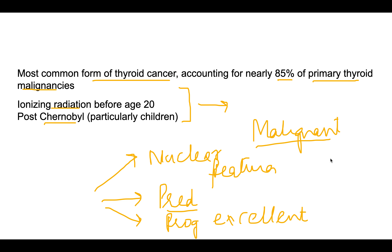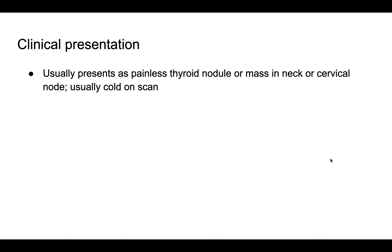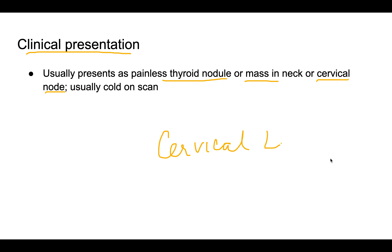Regarding clinical presentation, the patient can present with a painless thyroid nodule, generalized thyroid enlargement, a mass in the neck, or an increased lymph node size. There can be enlargement of the cervical lymph node, because papillary carcinoma metastasizes through the lymphatics to the cervical lymph nodes.